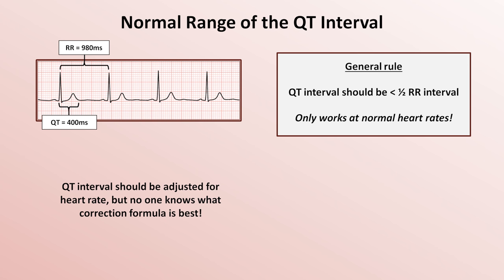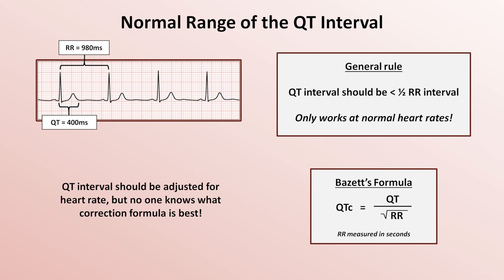By a large margin, the most commonly employed equation is Bazett's formula, which states that the QT corrected, or QTc, equals the QT interval divided by the square root of the RR interval as measured in seconds. What Bazett's formula does is to essentially give a rough prediction of what the QT interval for the patient would be if his or her heart rate could magically be reset at 60 beats per minute.